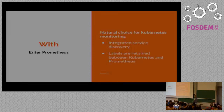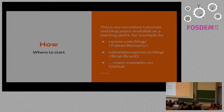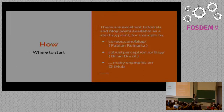So here is where Prometheus comes in. Prometheus seems to be a natural choice when doing Kubernetes monitoring. It has an integrated service discovery for Kubernetes, and it retains labels between Kubernetes and Prometheus. For example, when you define a label or an annotation in a Kubernetes definition, you have a good chance to have it retained in your Prometheus metrics. Another reason for using Prometheus is there are a lot of resources, tutorials, and blog posts available on the net — for example, Brian's Robust Perception blog or Fabian's Coroes blog — and there are tons of examples on GitHub.